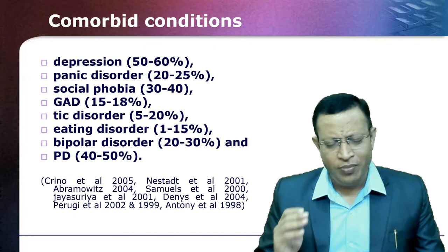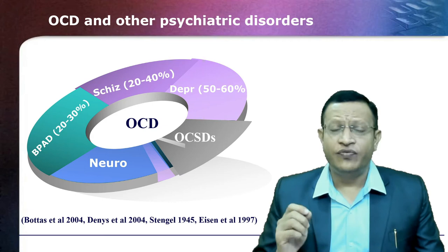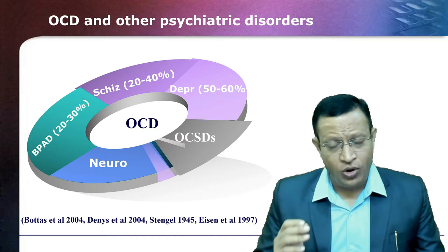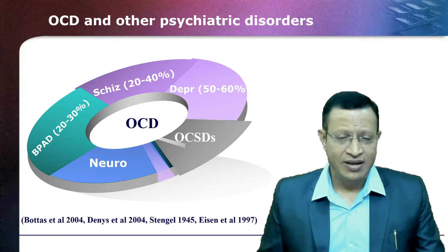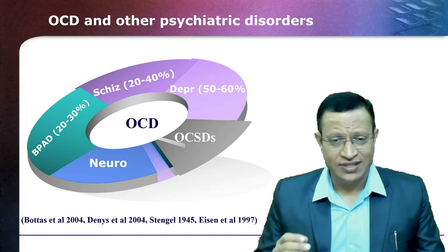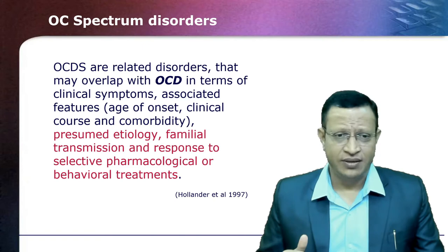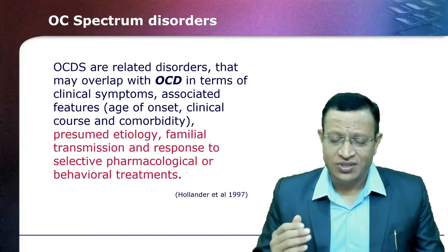OCD also cuts across many psychiatric disorders such as schizophrenia. 20 to 40 percent of schizophrenia patients have OC symptoms. Similarly, in bipolar affective disorder, 20 to 30 percent will have OC symptoms, and in depression we can also see OC symptoms. OC spectrum disorders and many neurological conditions also have OC symptoms. OC spectrum disorders are a cluster of disorders with similar phenomenology — repetitive thoughts, presumed etiology, familial transmission, and response to similar pharmacological agents. Hence, they are considered as OC spectrum disorders.